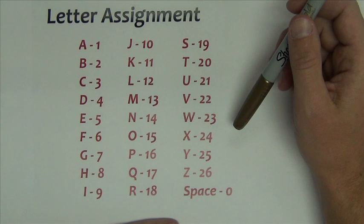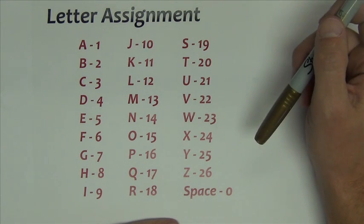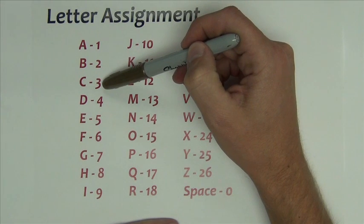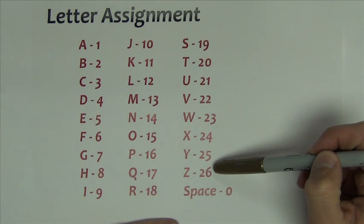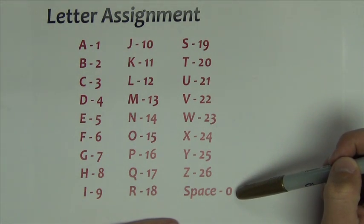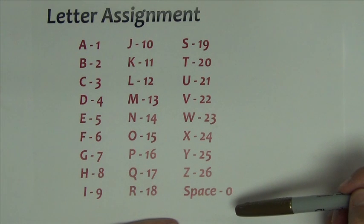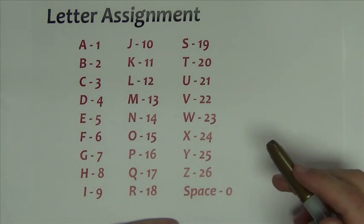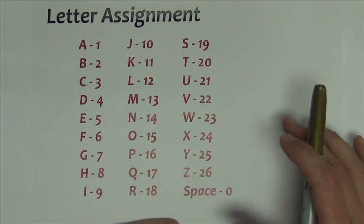Before we begin coding messages, what we first need to decide is a letter number assignment that we can all agree on. So what I did is just started with A is 1, B is 2, C, D, and so on, just going through the alphabet all the way down to Z is 26, and in the event that we use a space in our message we'll use the number zero. This is definitely a page that you want to keep handy as we're working on this activity so you can always reference what letters correspond to what numbers and vice versa.